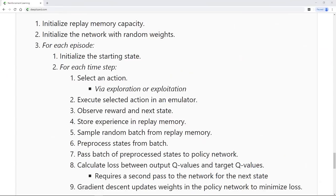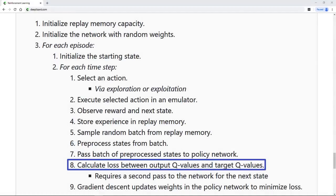Recall from last time that we left off with this summary that describes the training process of a Deep Queue network. We briefly mentioned that there were some issues that could arise from this approach though. These issues come into play in the step where we calculate the loss between the output queue values and the target queue values. Remember, this is the step that requires a second pass to the Deep Queue network, otherwise known as the policy network.